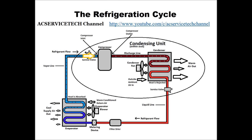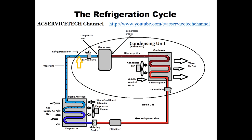You can check out some of my other videos on how to find the target superheat, because it's not on the rating plate like subcooling is. If you need to adjust the charge on a system with a piston or capillary tube, you'll have to set the superheat and make sure that you get it very close to the target superheat for efficiency and to make sure you don't have any liquid getting into the compressor on cooler, less humid days. Hope you enjoyed it, and we'll see you next time at the AC Service Tech Channel.